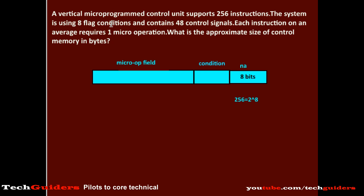There are 8 flag conditions, hence there are 8 inputs to the multiplexer. So the number of bits required in the selection field or the condition field is 3 bits.